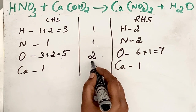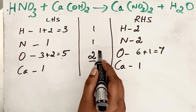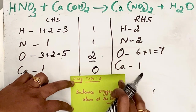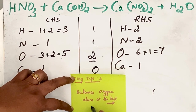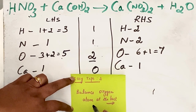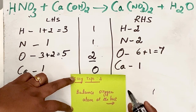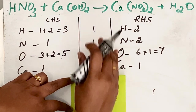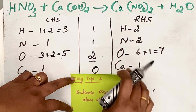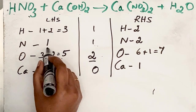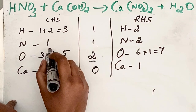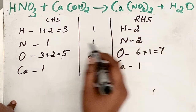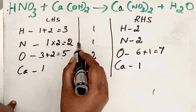Until you get zero in the difference column for all elements, we continue balancing. Notice the number of oxygen atoms is higher. There is another easy tip: balance the oxygen atom last, because in any chemical equation the number of oxygen atoms is always higher. So let us keep oxygen aside for now and finish all other elements first. Let us start with nitrogen.